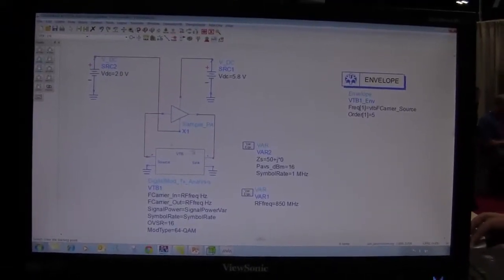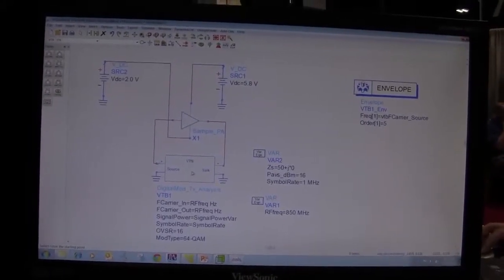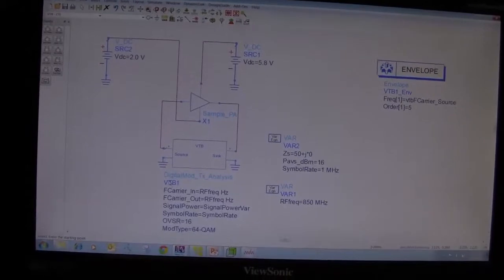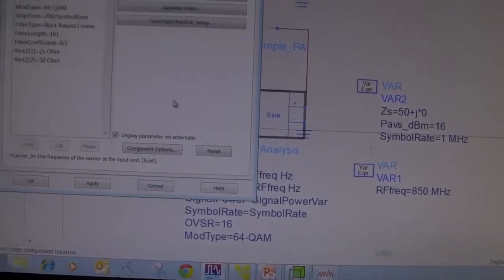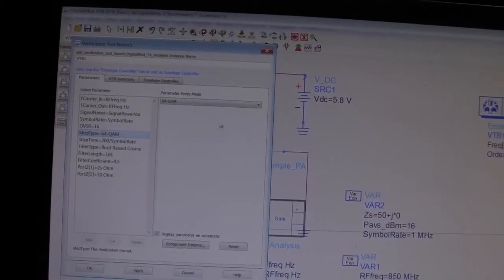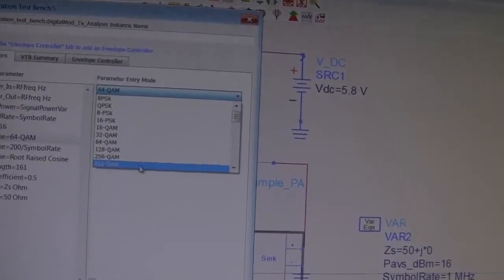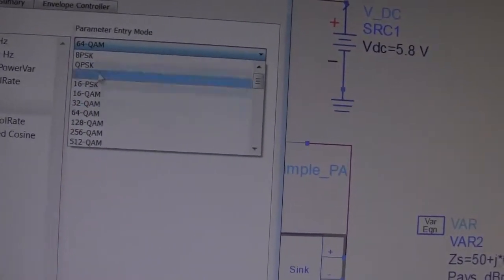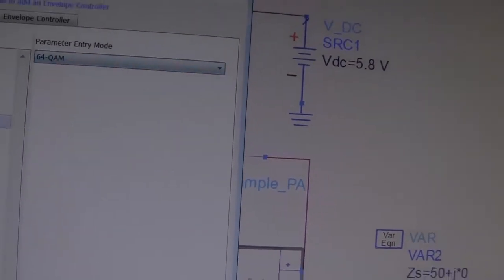Let's say for this VTB in the digital modulation, if I double click on it, notice I'm using the modulation type 64 QAM. You can also include 128 QAM, 256, 512, all these different modulation types.